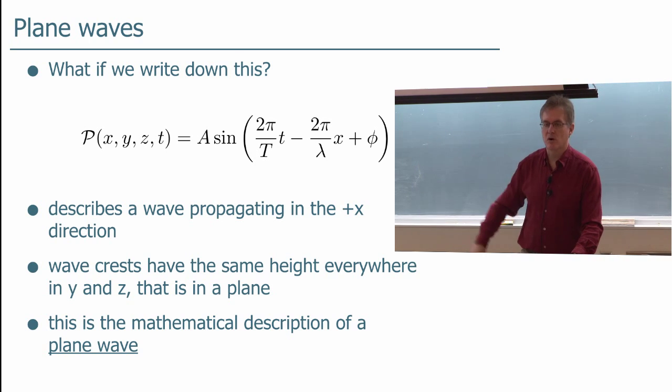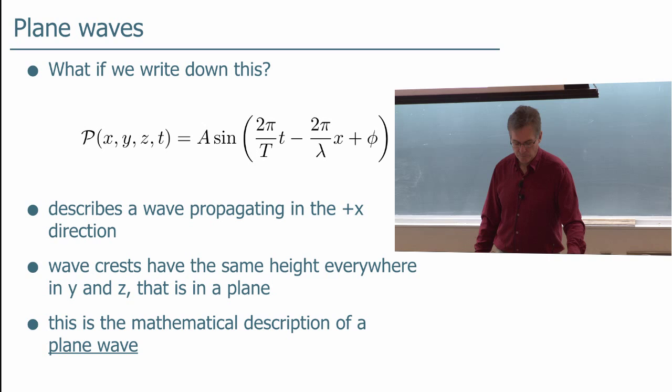So even though we first wrote down Y of X and T, Y was probably a bad choice for the function itself. This is a better choice, P, because it doesn't look like a space coordinate at all. So this is a plane wave propagating in the plus-X direction. An animation of this looks like this. Now here you have these sheets and here they're propagating from left to right. And you can imagine that I don't have a three-dimensional projector, right? But the sheet would extend all the way out in the classroom for all X and Y to infinity. And these sheets are moving in this direction as the wave travels.